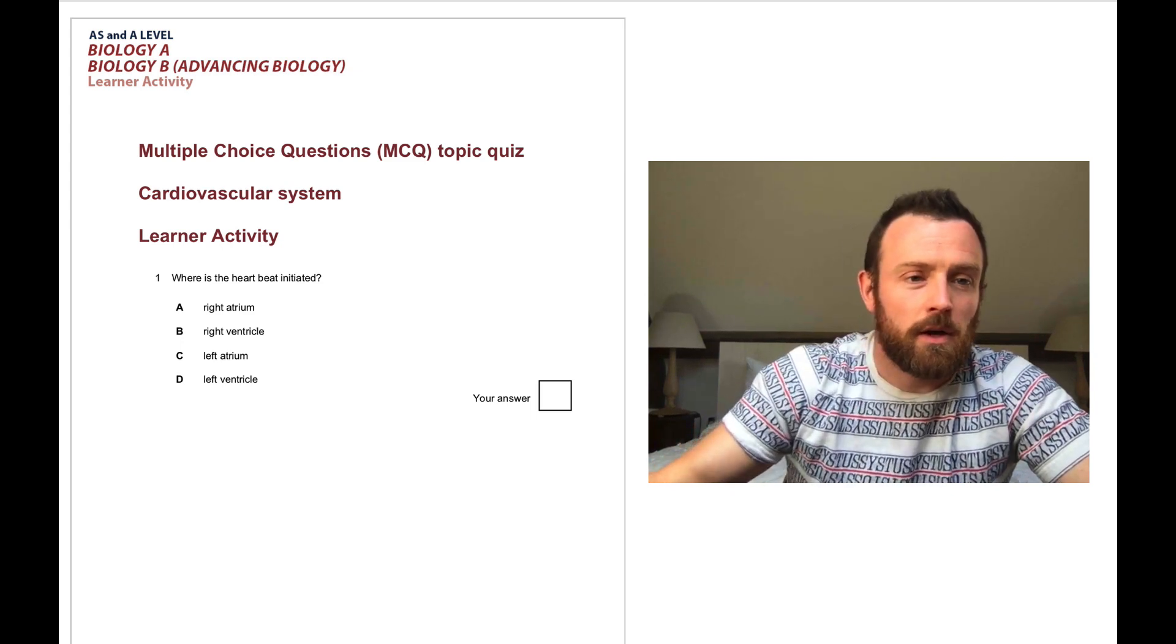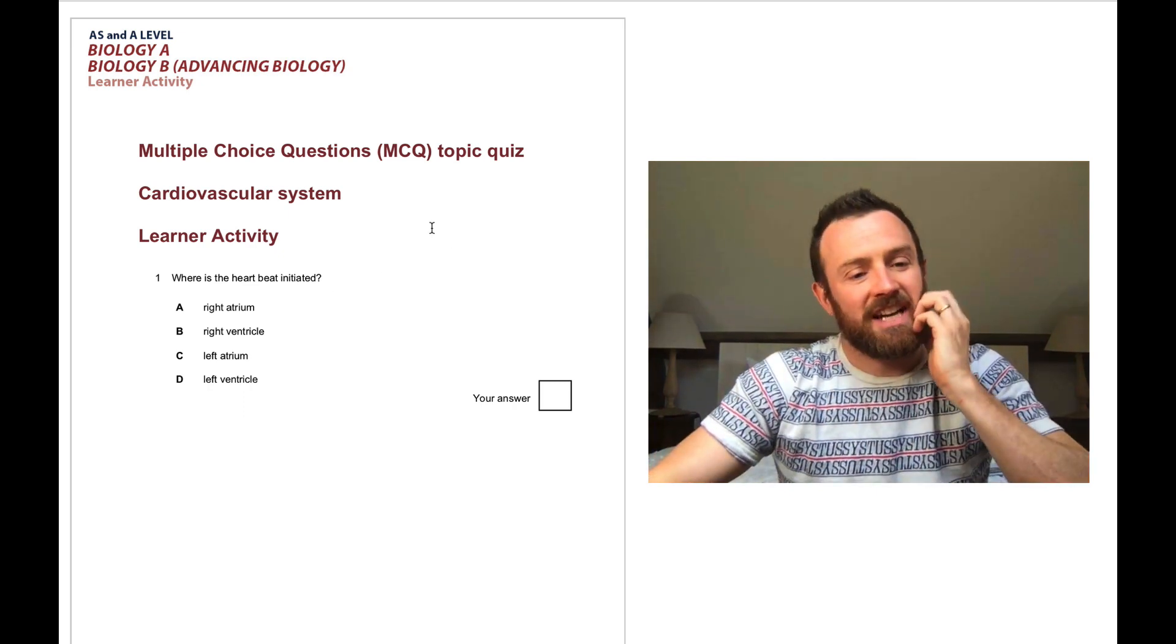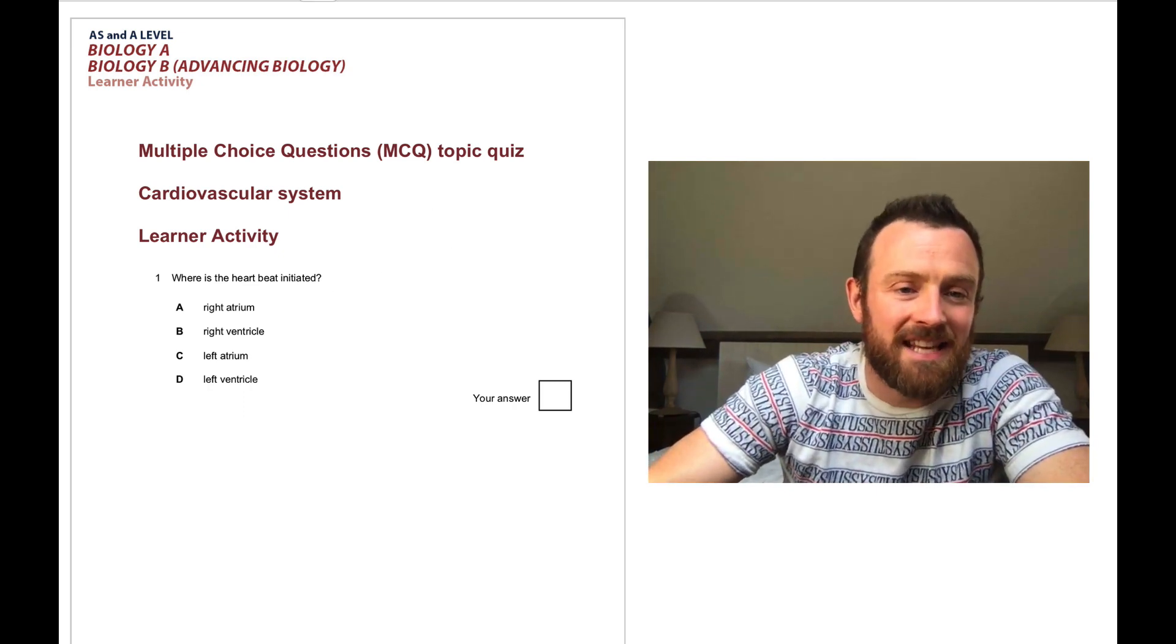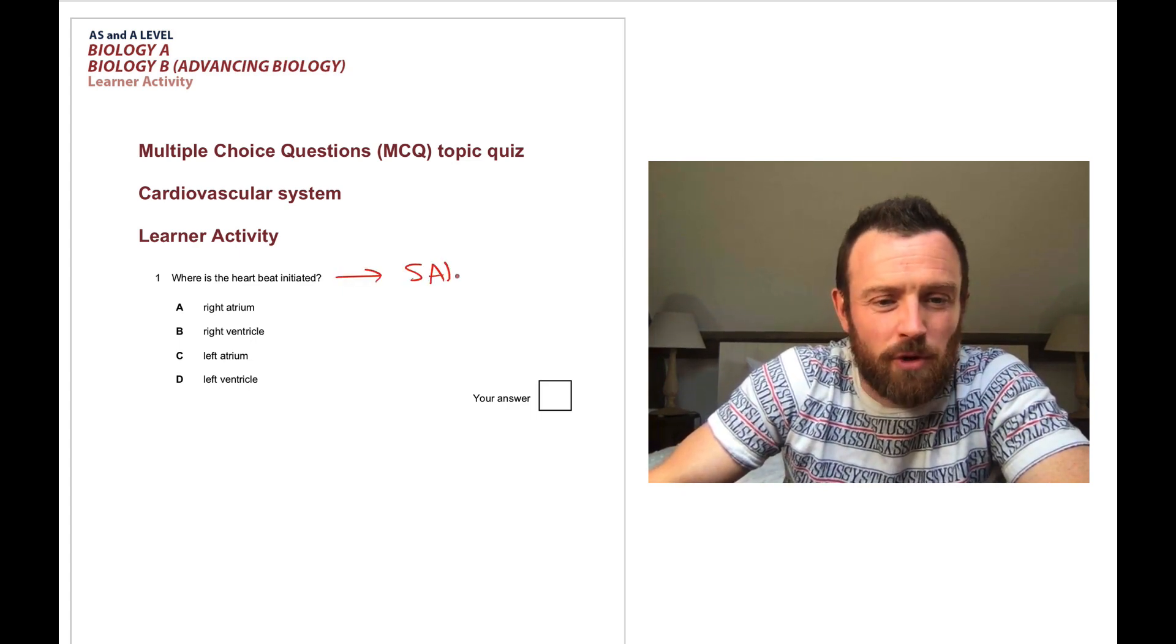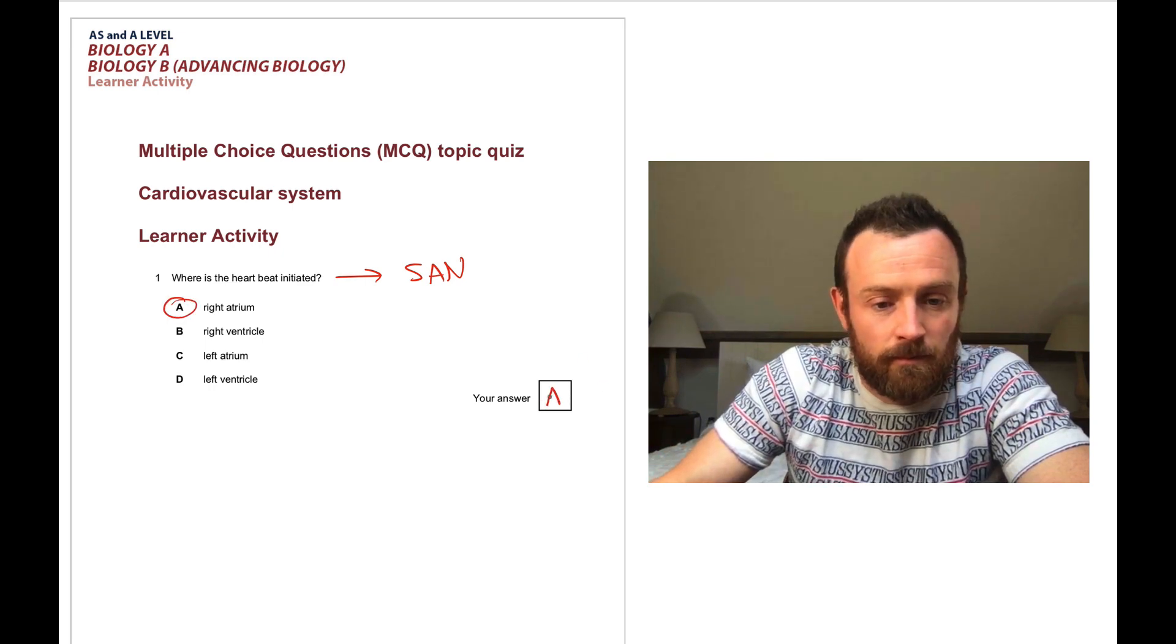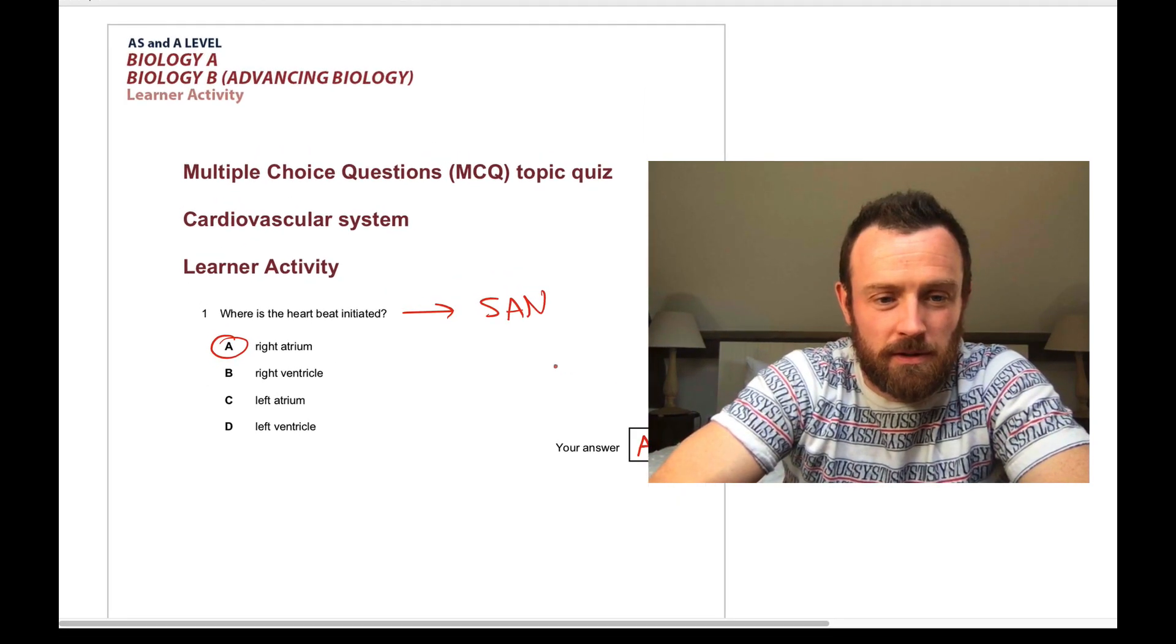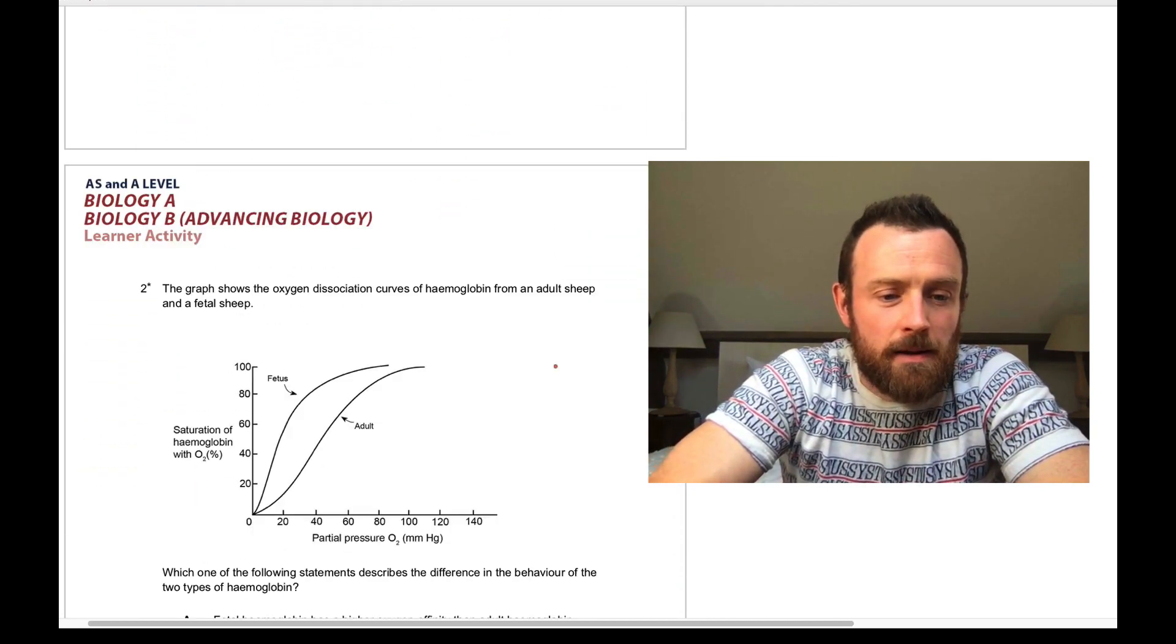Let's get into it. Let's start with question one. Where is the heartbeat initiated? Well, it's initiated in the SAN, the sinoatrial node. And the SAN is on the right side of the heart in the atrium. So it's here.